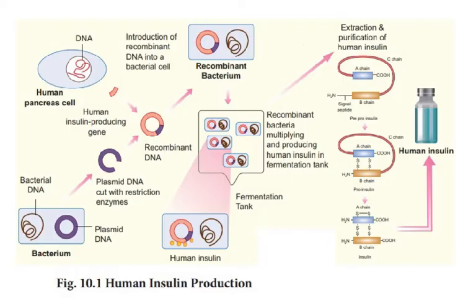How do we do this? On one side you have the bacteria, and on the other side you have the human pancreas cell. You can take the gene from any cell of the body because all cells have the same genetic material. Every human being started from one cell, the zygote. Every cell of your body is the same, except red blood cells which have no nucleus and therefore no DNA.